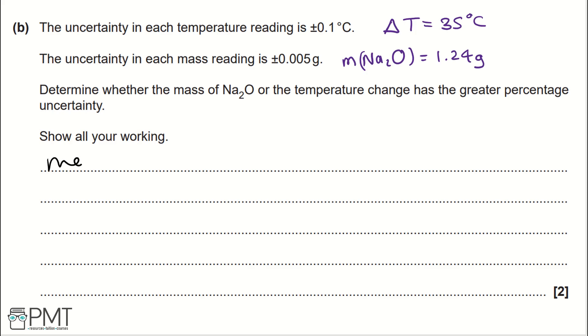If we start by working out the percentage uncertainty of the mass of Na₂O, we work out percentage uncertainty by taking the uncertainty of each reading, 0.005 grams in this case, and then we multiply by the amount of times we've used a mass reading, in this case twice. I've rewritten what we worked out as our mass of Na₂O, which was 1.24, so we divide it by 1.24. Then, we multiply by 100 to get a percentage. In this case, our percentage is 0.81% for mass.